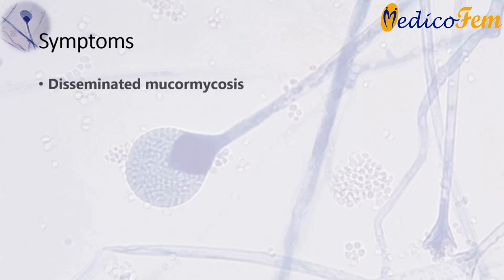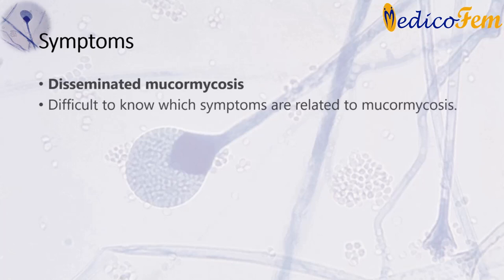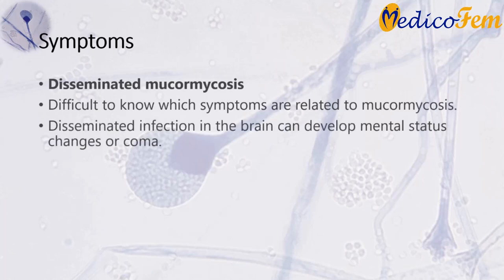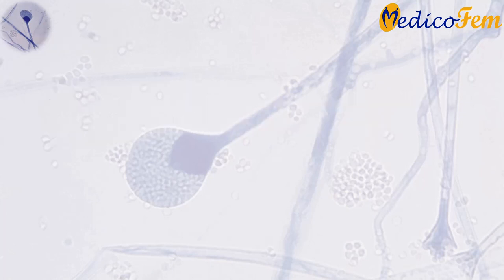Disseminated mucormycosis typically occurs in people who are already sick from other medical conditions, so it can be difficult to know which symptoms are related to mucormycosis. Patients with disseminated blood infection in the brain can develop mental status changes or coma.